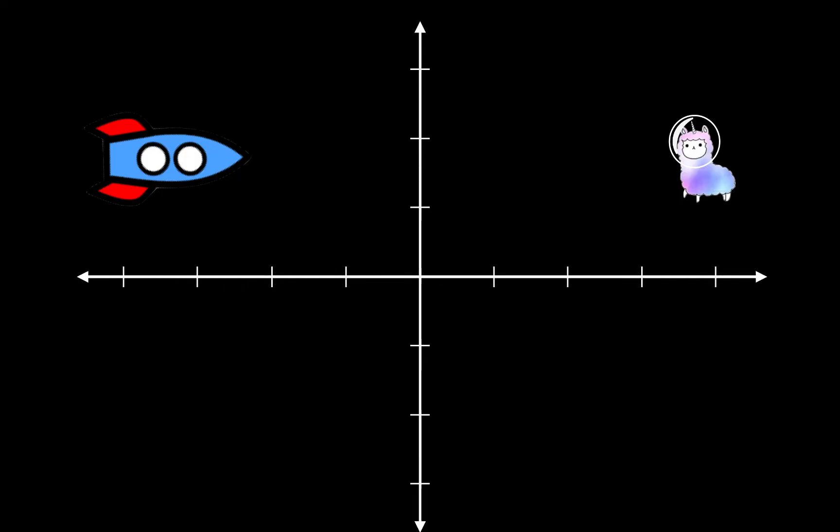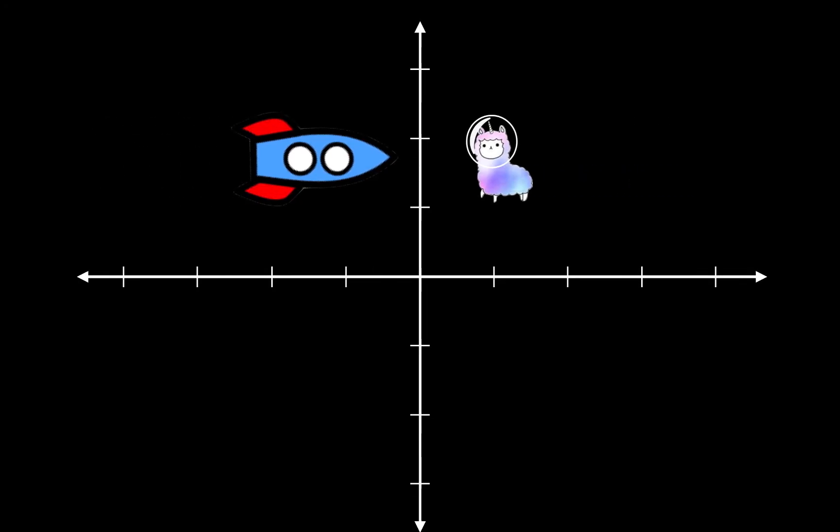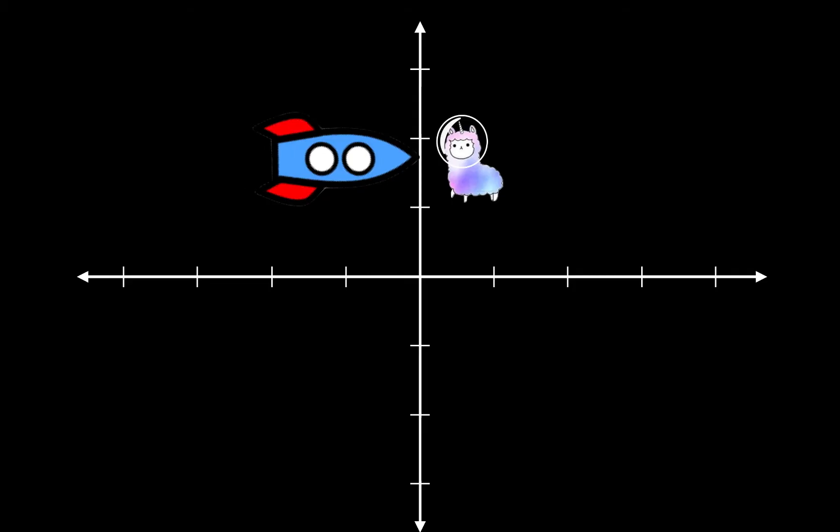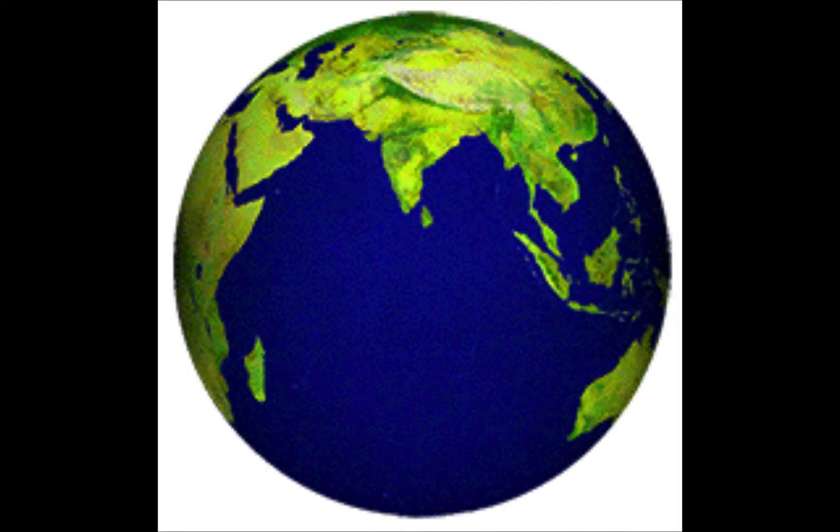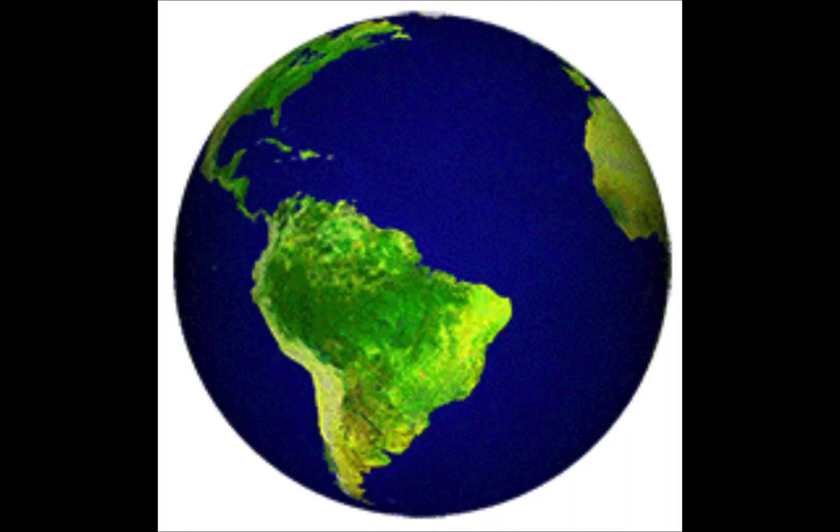When we say that motion is relative, we are saying that the motion we perceive depends upon the frame of reference we perceive it from. Scientists used to believe that there must be some absolute stationary frame of reference, and if they could just find it, all motion could be measured relative to that. The Earth wouldn't work as the stationary frame, because although the ground may seem to be stationary...